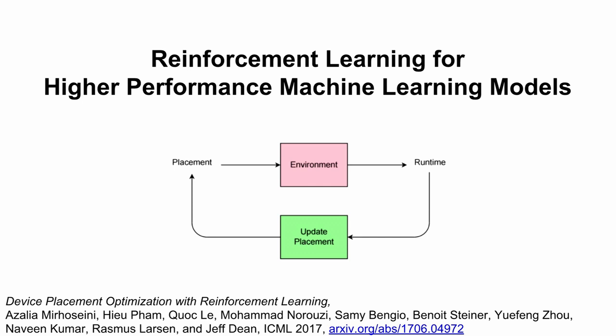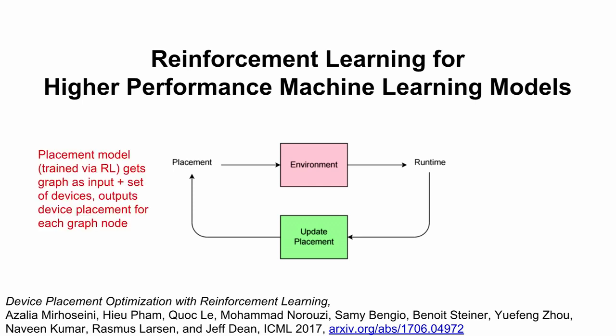We've been exploring using reinforcement learning to place pieces of computation in large models across many devices. The problem setup: you give a computation as a graph of operators and dependencies, and specify a set of devices—say, four or eight GPUs. This turns out to be a perfect RL problem: you make a placement for all nodes in the graph, measure how fast it runs, and that gives you RL signal back to the placement model. You can steer toward placements that perform better and away from ones that perform badly. The measured time per step gives you the pure RL reward.